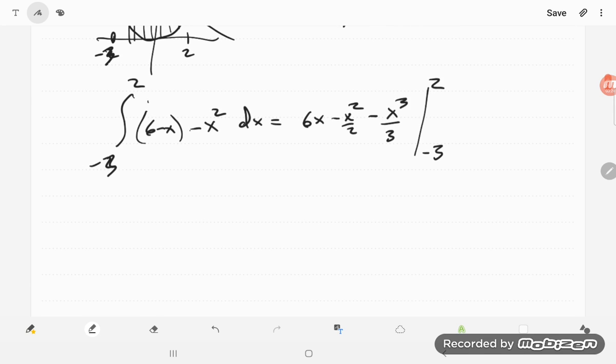I get 6x minus x squared over 2 minus x cubed over 3 from minus 3 to 2. And I guess I should say this is part A.